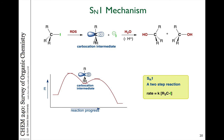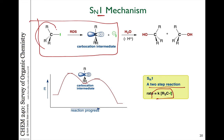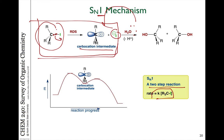How does this relate to the SN1 mechanism? The SN1 mechanism is a two-step reaction where the rate only depends on one thing — hence a unimolecular reaction — because the first step is the generation of a carbocation from the alkyl halide. The halogen bond breaks to form the halide, generating a carbocation intermediate. That's the slowest step, or the rate-determining step. In the next step, the nucleophile — in this case neutral water — will add to that carbocation.